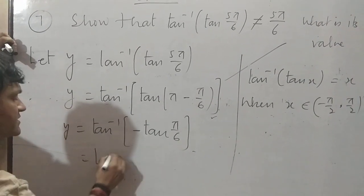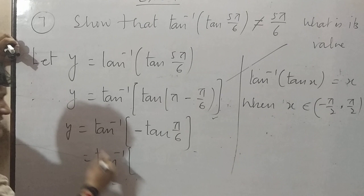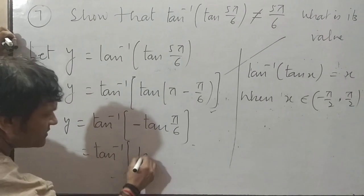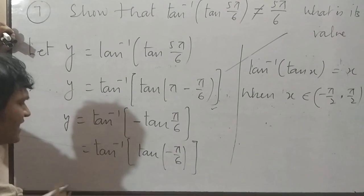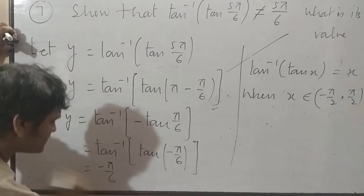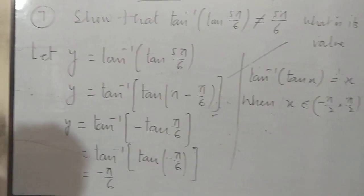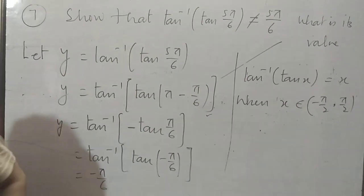Now tan inverse. Don't cancel tan like this, just put minus here. Tan of minus π/6. Tan can cancel. Answer is minus π/6. This way you are going to solve question number 7.